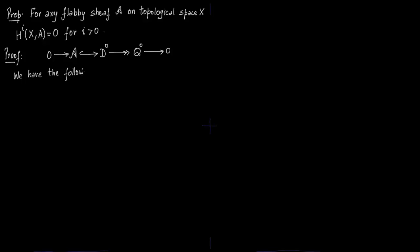We will get the following exact sequences. First notice that we have a resolution of sheave A in terms of D0, D1, D2, D3 in terms of discontinuous sections, which we constructed before. Now we are just going to append some exact sequences to this resolution. You start from 0 to D0 because A is completely contained in D0. Then you form the quotient map Q0.